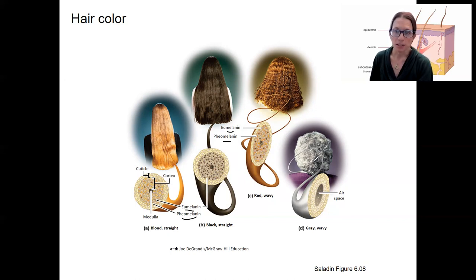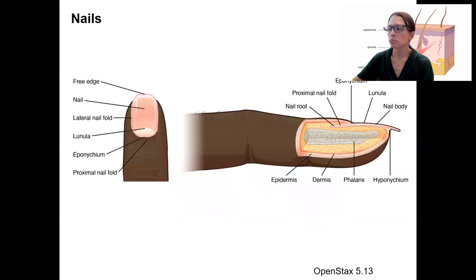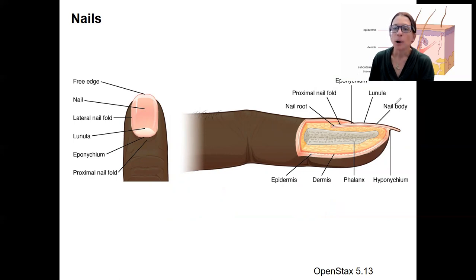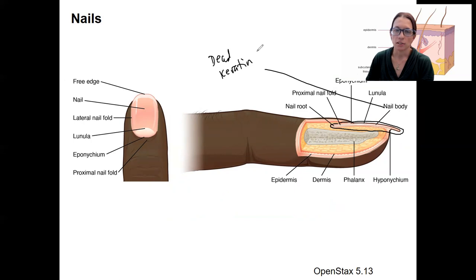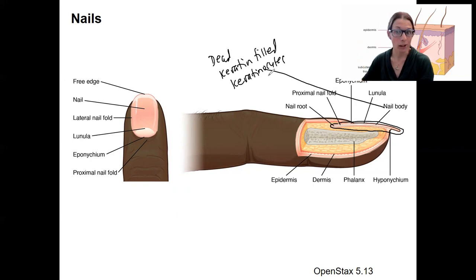As we age, we lose that melanin and those pigments, and that's what makes hair gray or white. It's also a genetically determined melanin production — both type and amount. Nails also have various names for all their parts. The nail body is the bulk of the nail — what you think of as your nail — and that is composed of dead, keratin-filled epithelial cells. You can read more about hair growth and nail growth in your book if you'd like.